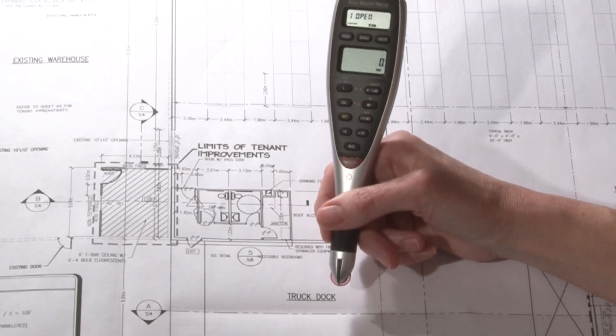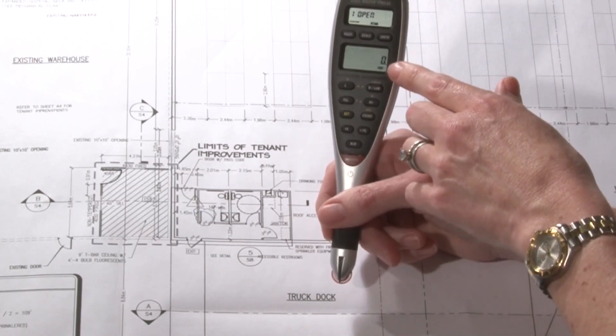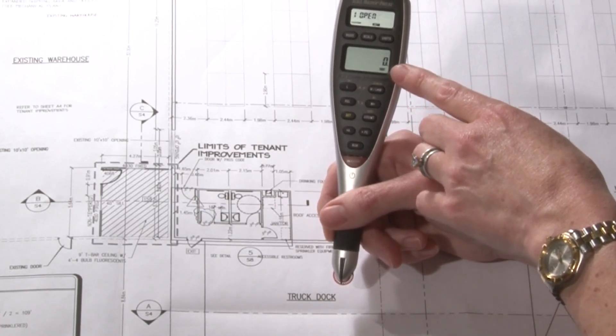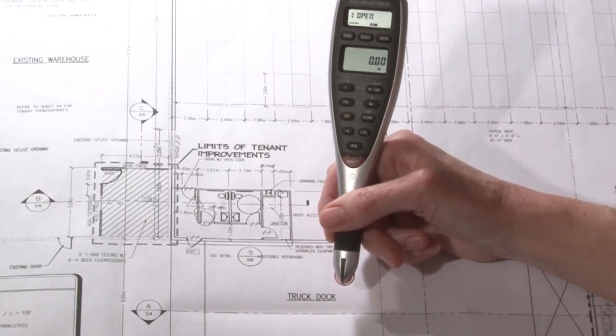I'm going to check the units on the display. It's showing millimeters. I want to change that to meters, so I just press the units button until I get to meters.